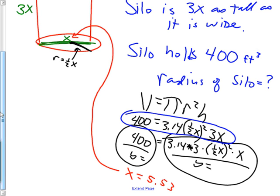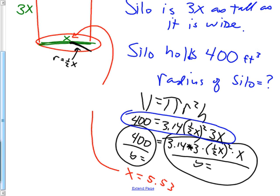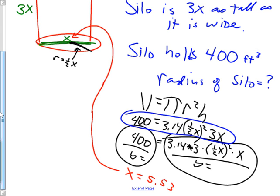If you're not allowed a graphing calculator, you could factor — set the equation equal to zero and factor it — or use the quadratic formula: x = (−b ± √(b² − 4ac)) / 2a. However, this equation is actually a cubic, not a quadratic, as you can see from the shape of the graph. So the quadratic formula doesn't apply here. You'd have to factor it instead, but you'll likely have a calculator on this test anyway.